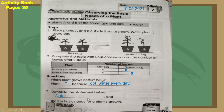Water and sunlight are the basic needs for a plant to grow. When you put the plant outside the classroom, the plant can get air and sunlight. You still need to water the plant every day. So make sure the plant can get water, air, and sunlight.